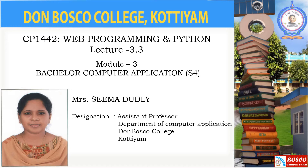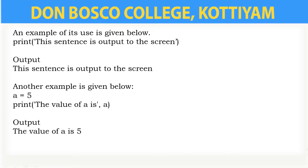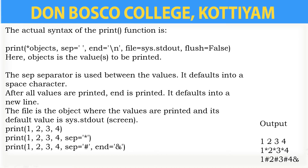Two main parts of a program are input and output. Python provides numerous built-in functions that are readily available to use in programs. The input() and print() functions are the two important functions used for input and output operations. To print values to the screen, we will be using the function print().